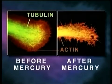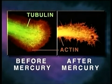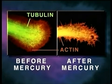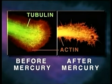Shown here is a neurite growth cone stained specifically for tubulin and actin before and after mercury exposure. Note that the mercury has caused disintegration of tubulin microtubule structure.